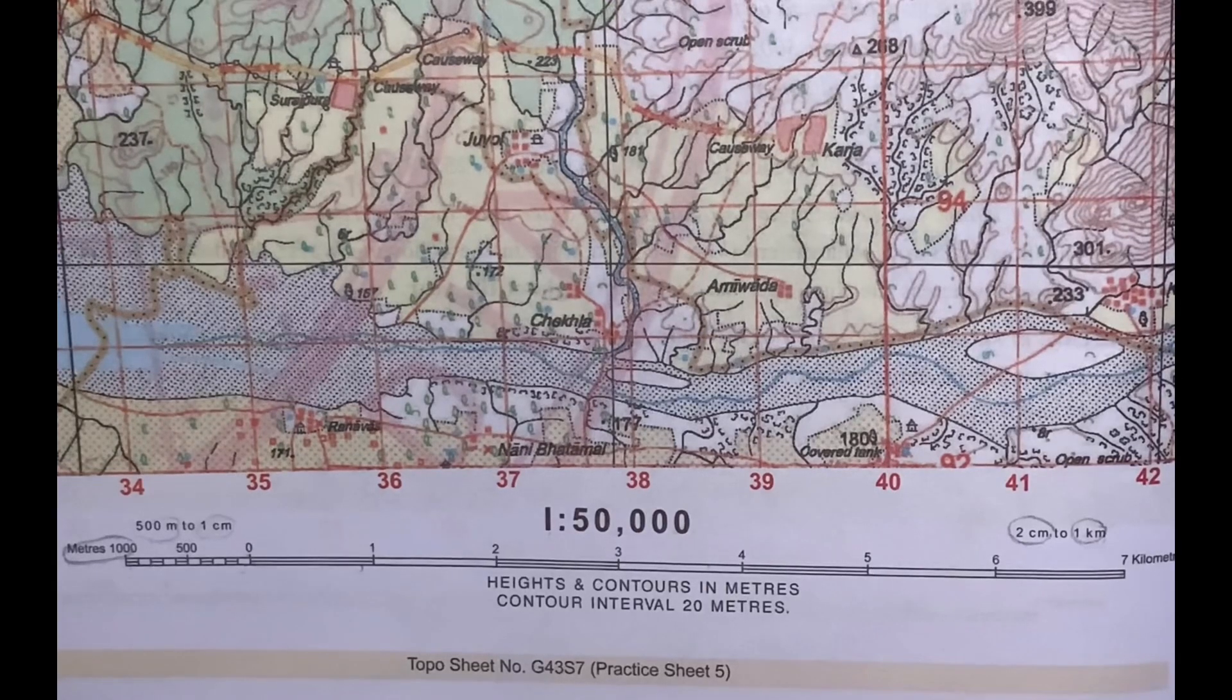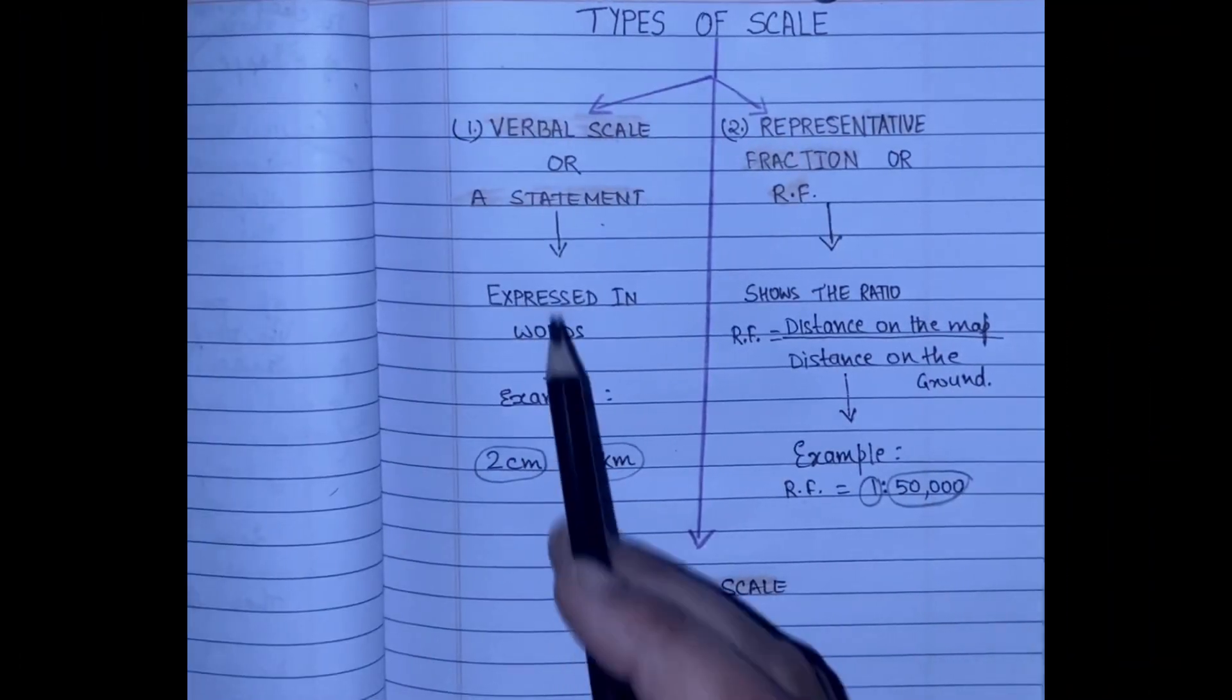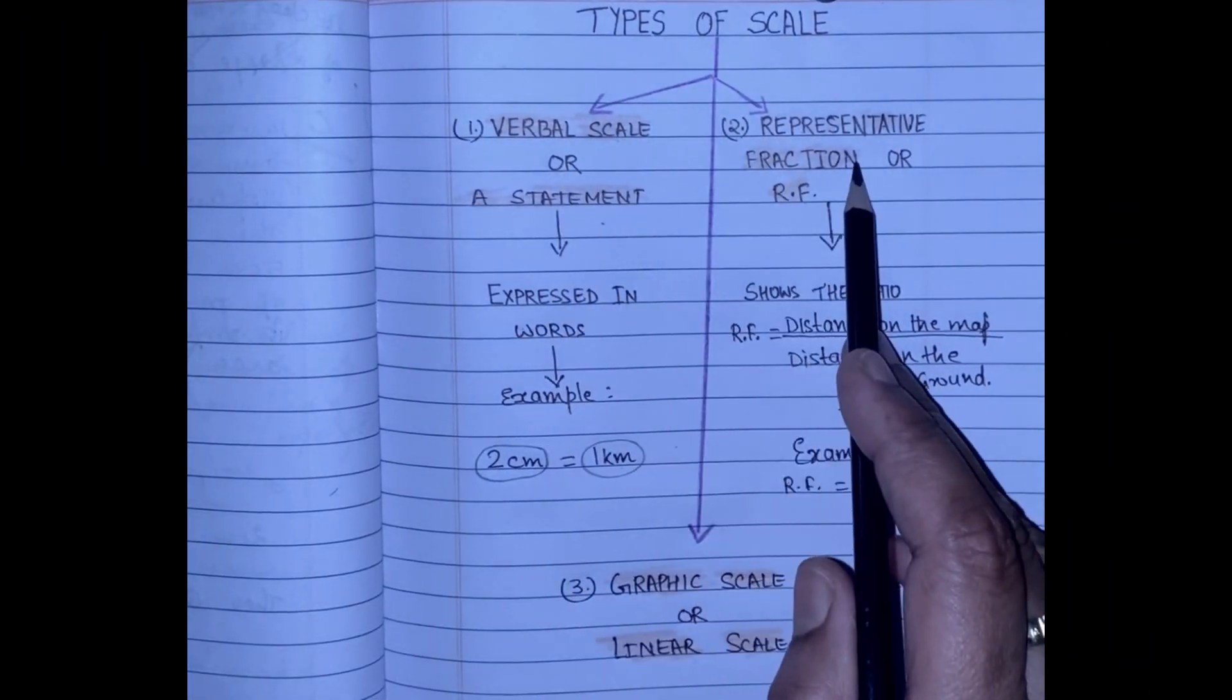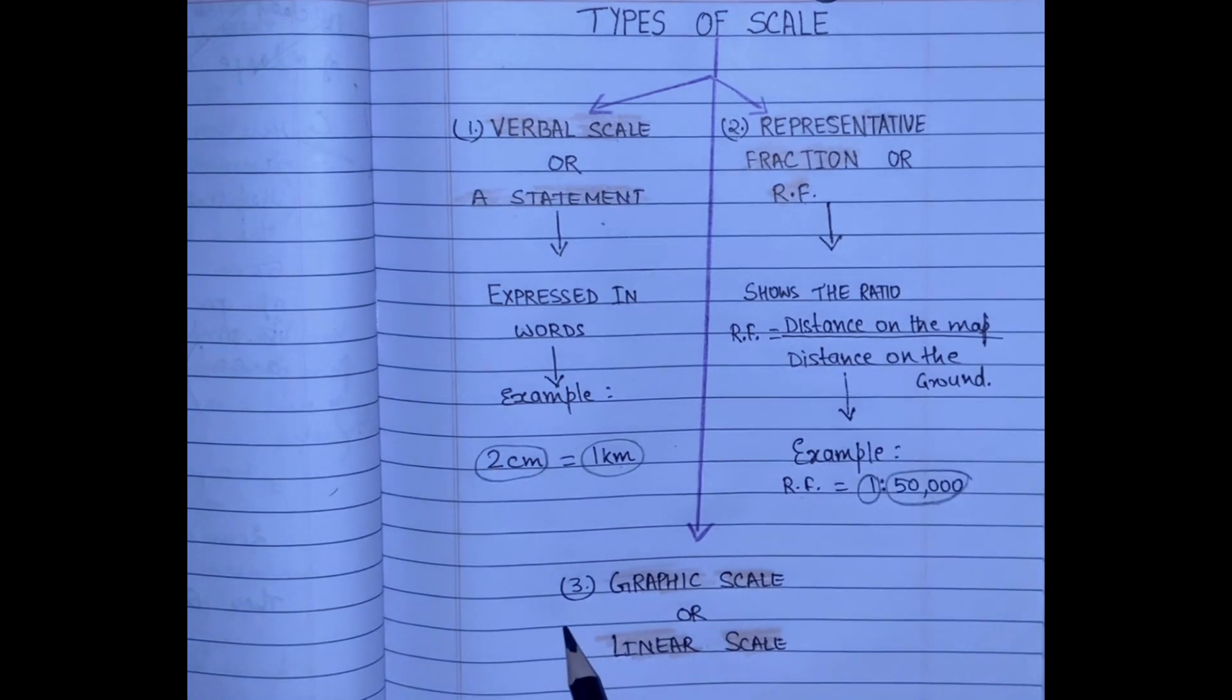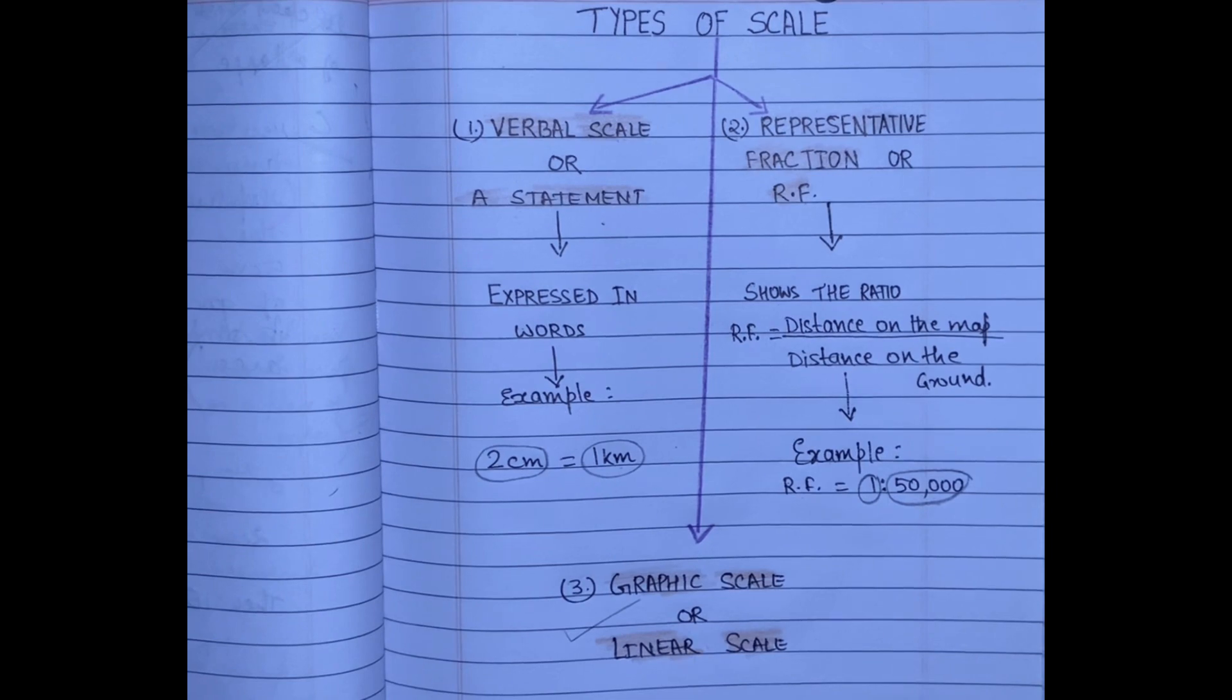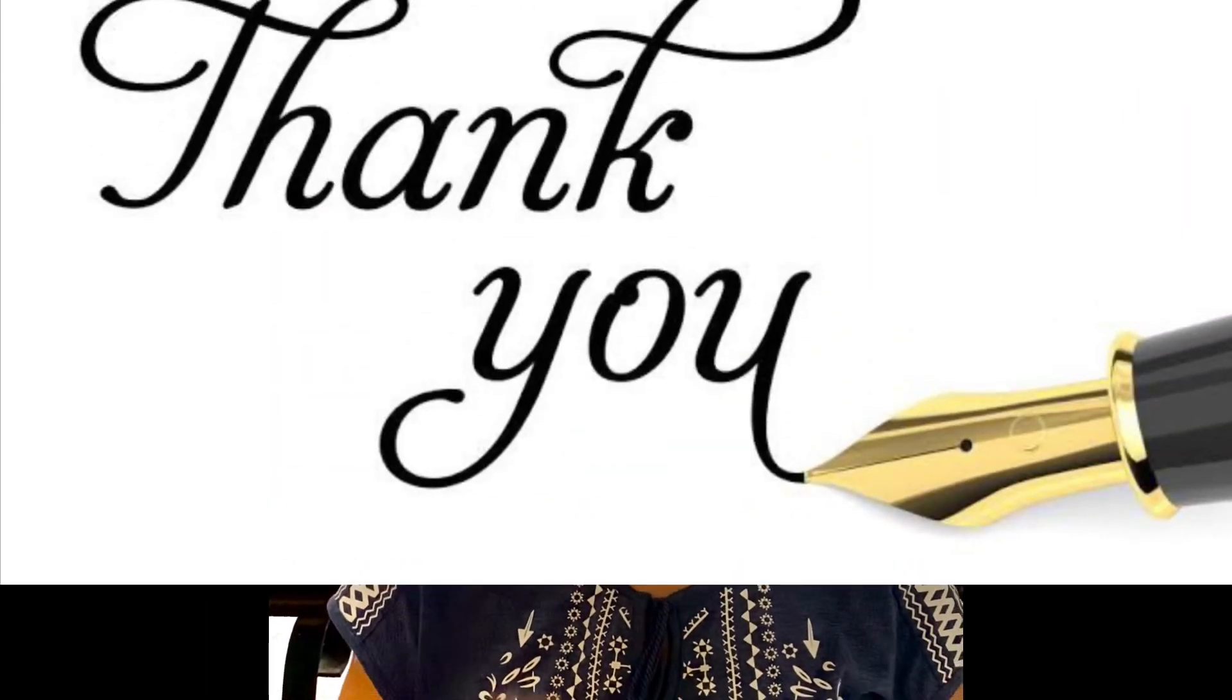Among all three types, linear scale is the most accurate method of measuring distances on the map. Thank you very much for watching. Stay happy and healthy.